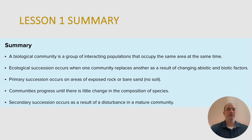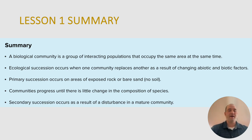In summary: a biological community is a group of interacting populations that occupy the same area at the same time. Ecological succession occurs when one community replaces another as a result of changing abiotic and biotic factors. Primary succession occurs on areas of exposed rock or bare sand with no soil. Communities progress until there is little change in the composition of species — that is our climax community. Secondary succession occurs as a result of a disturbance of a mature forest. Hopefully this helps you out with community ecosystems and biological communities, and how these communities change.